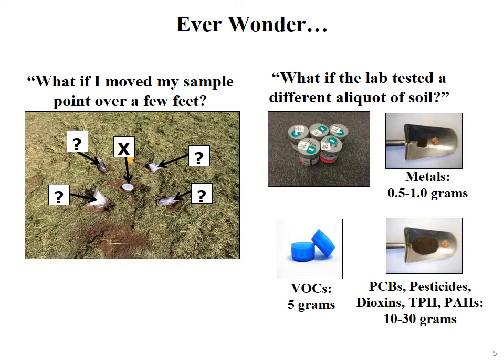When the laboratory gets your soil or sediment sample to test for metals, they typically grab about half a gram or one gram — a tiny pinch of soil — usually from the top of the jar. You can't homogenize soil or sediment samples down to the scale of mass that laboratories test: one gram for metals, five grams for VOCs, and ten to thirty grams for PCBs, pesticides, dioxins, and TPH. There's really no scientific rationale for the mass of soil tested by the laboratory.